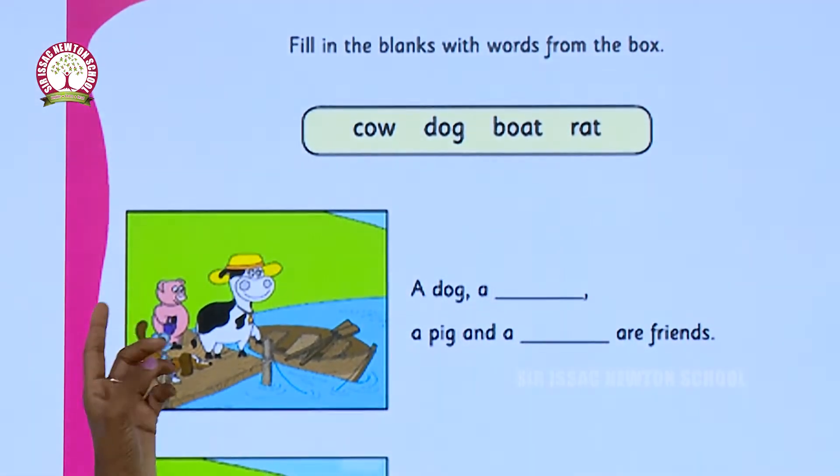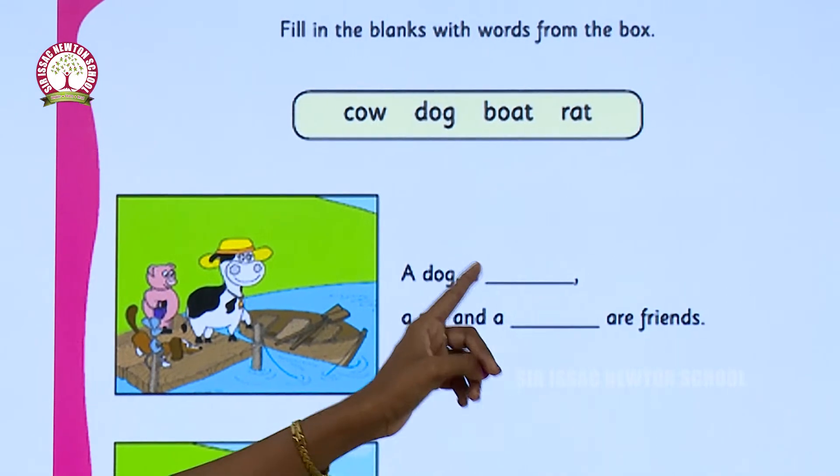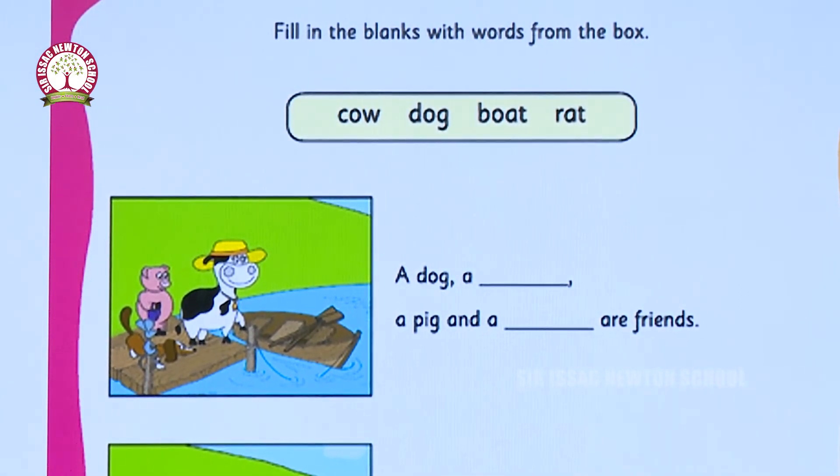Look at the first picture children. A dog, a dash, a pig and a dash are friends. We have to fill the blanks with the given words.